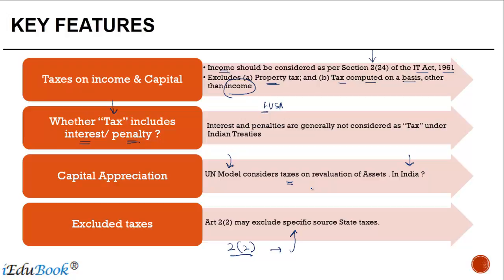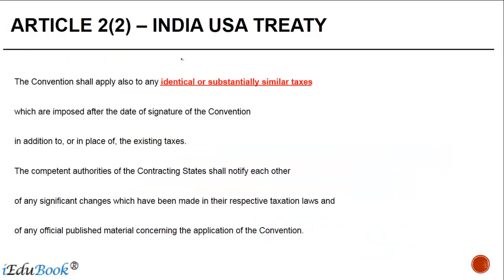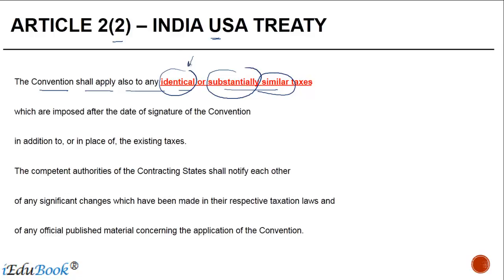To have a complete picture, let's also look at Article 2.2 of the India-USA treaty, which has slightly different wording compared to the India-Netherlands treaty. The convention shall apply also to any identical or substantially similar taxes. There is a difference between 'identical' and 'substantially similar' — identical means exactly the same, while substantially similar covers a case where a new tax has the same basis and manner of computation as the original.